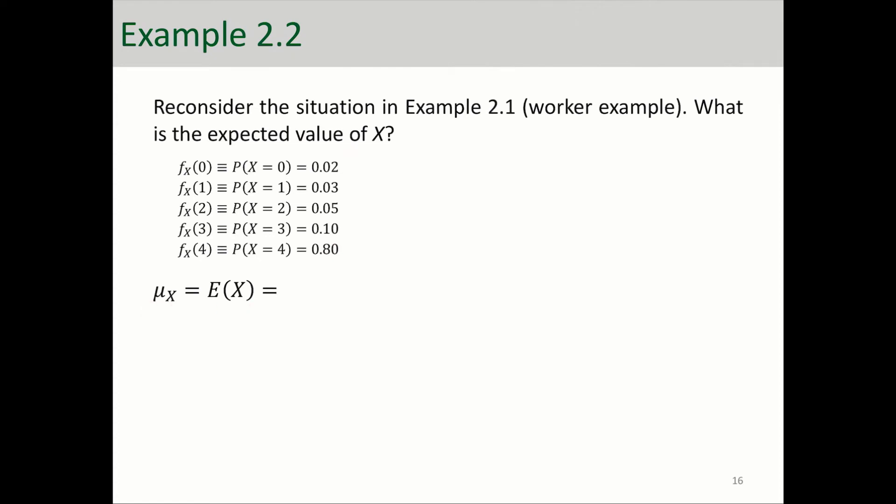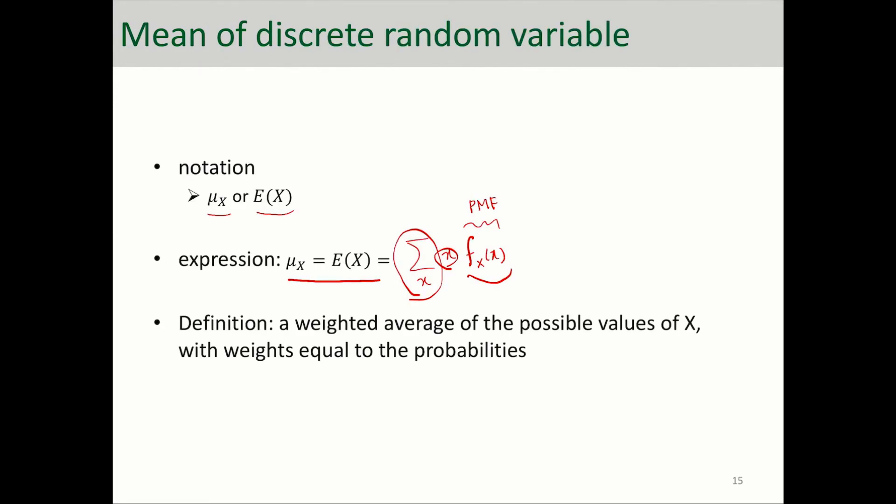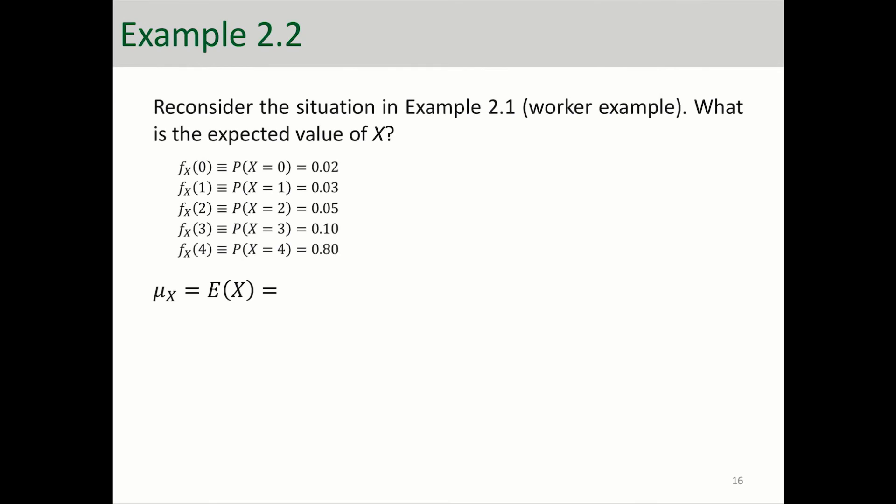In other words, we want to calculate the average number of correct tasks performed correctly. So to follow the formula that we introduced here, that's going to be the summation over X values, and X values start from 0 to 4: Σx·f(x).